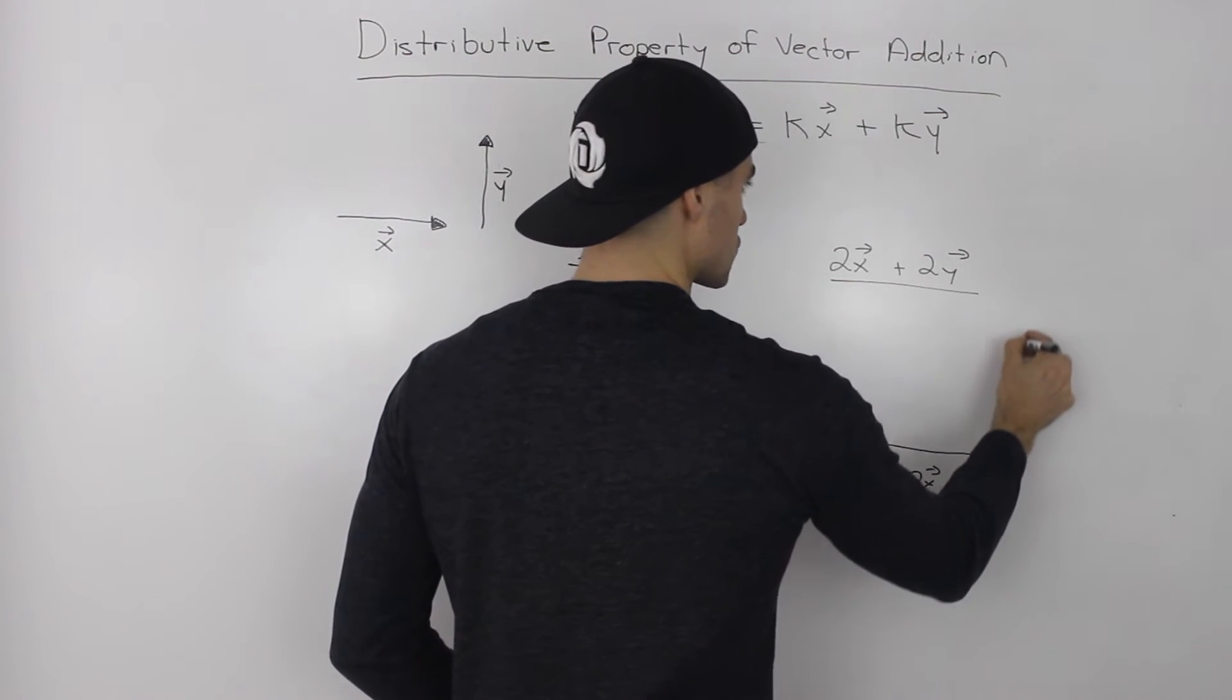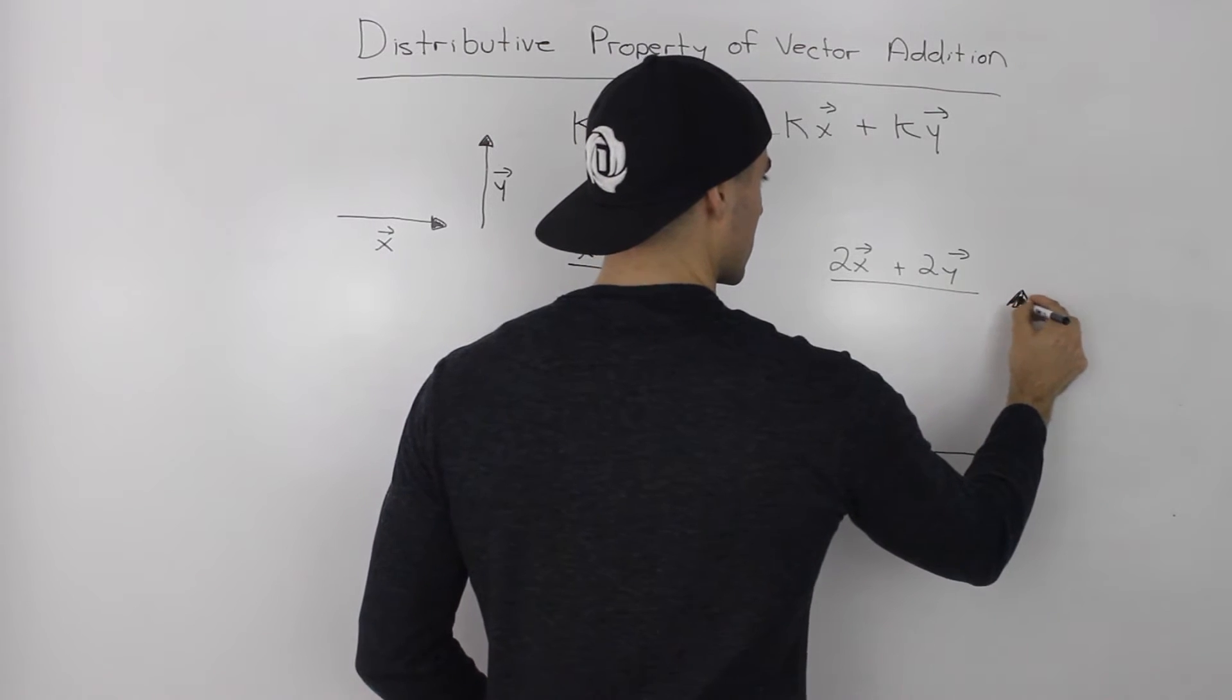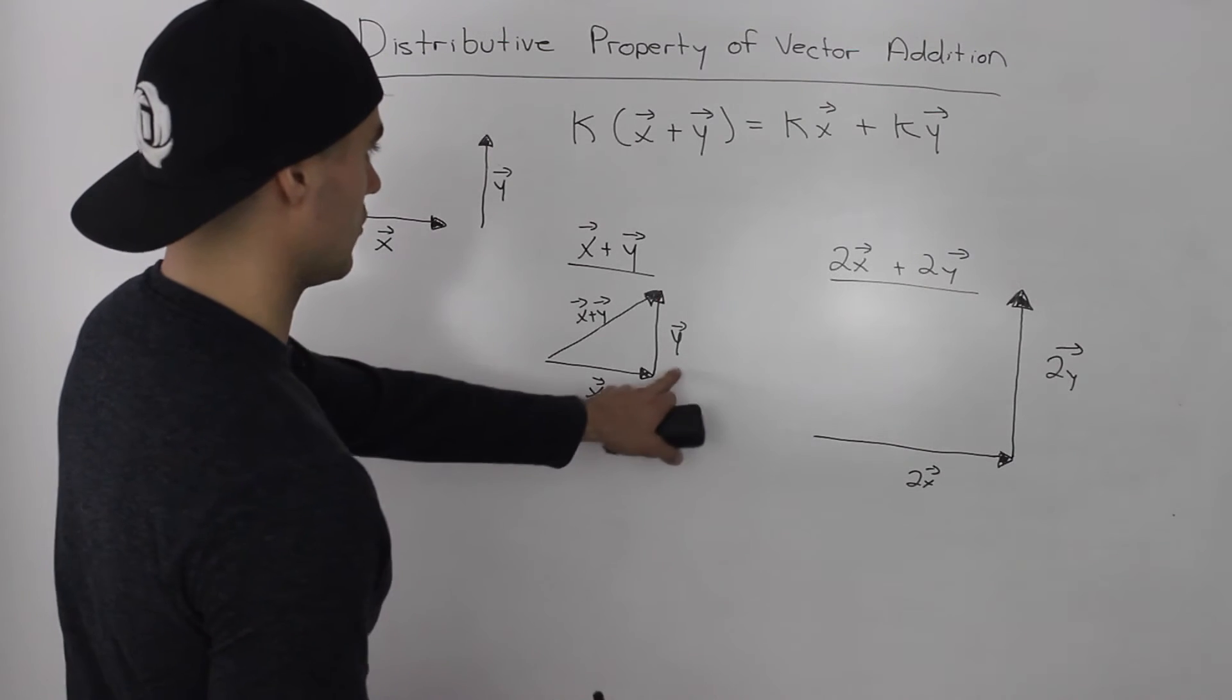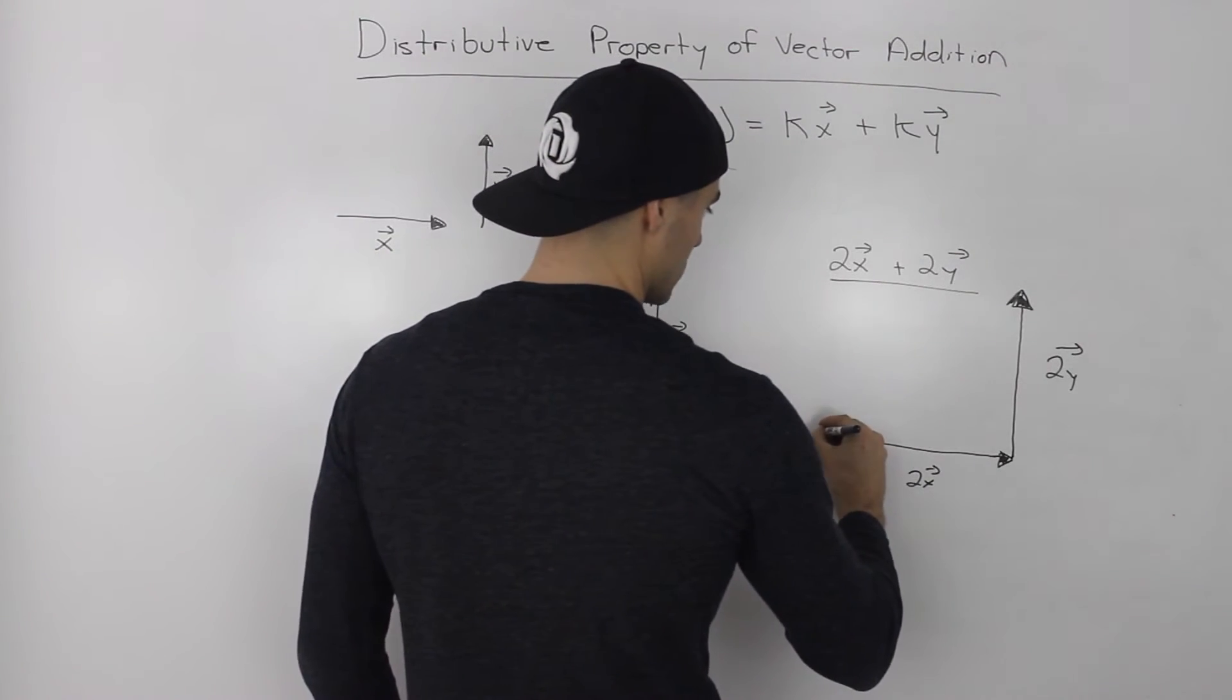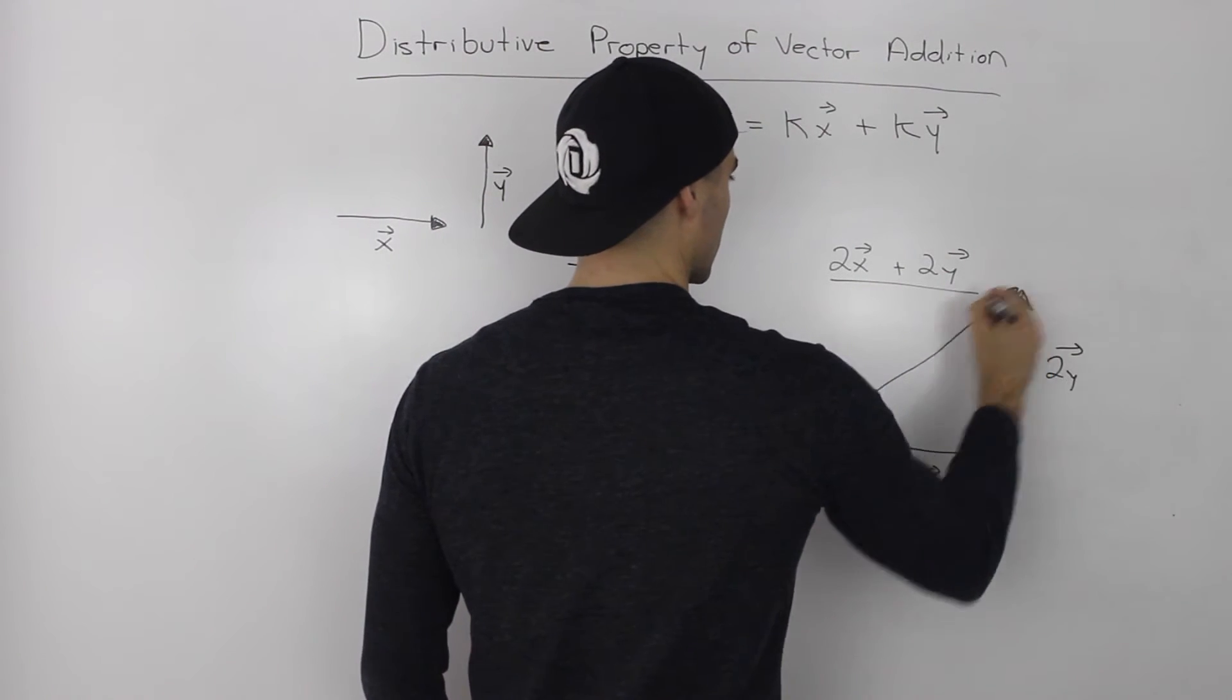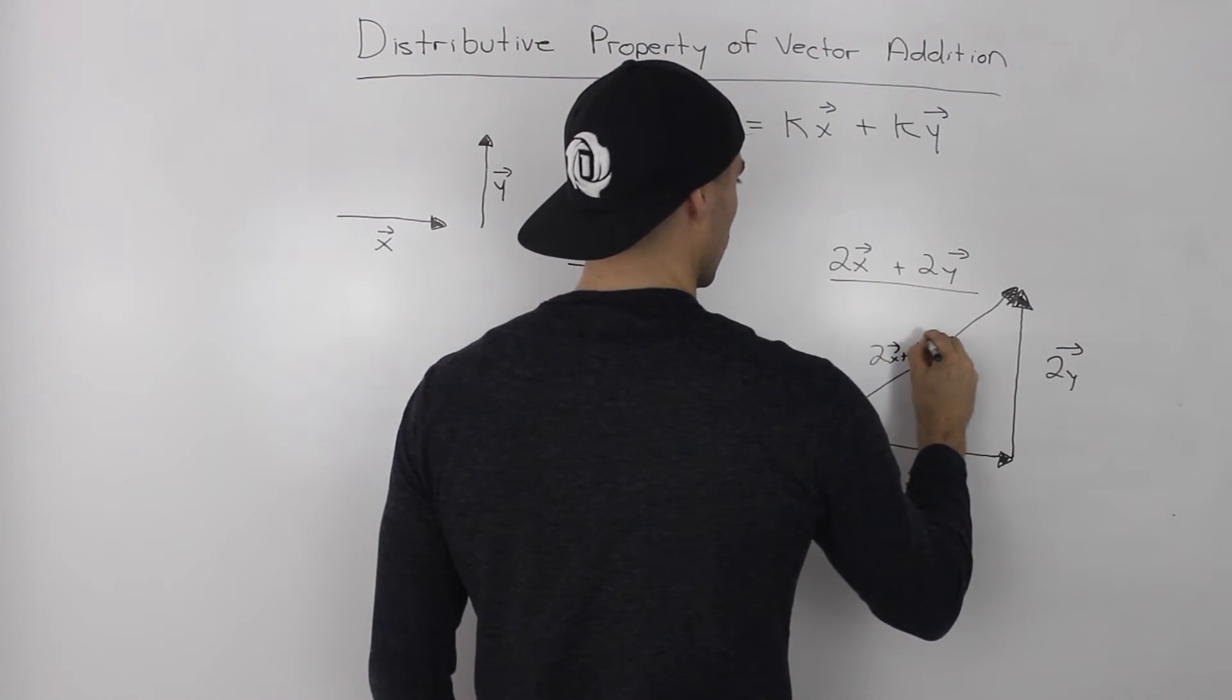So 2y would just go straight up. And that should be double the magnitude of y. So the resultant between those would be here, this 2x plus 2y.